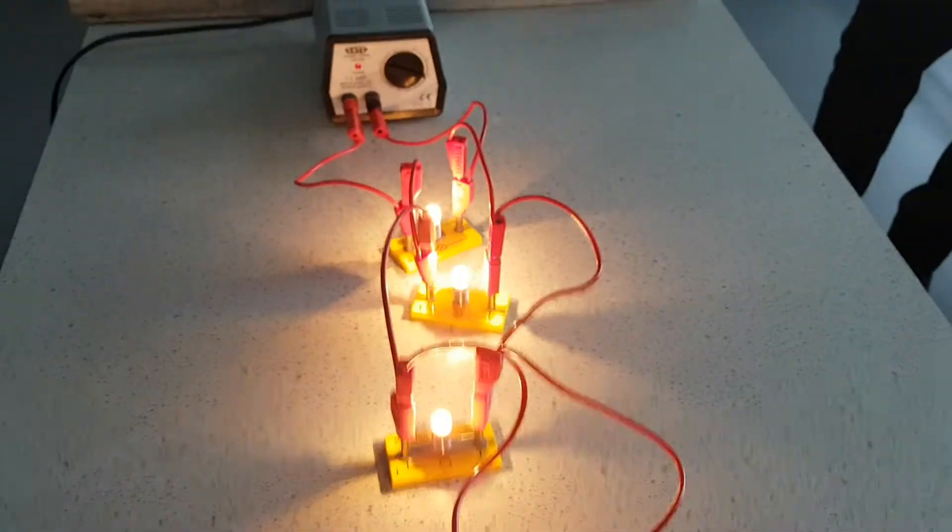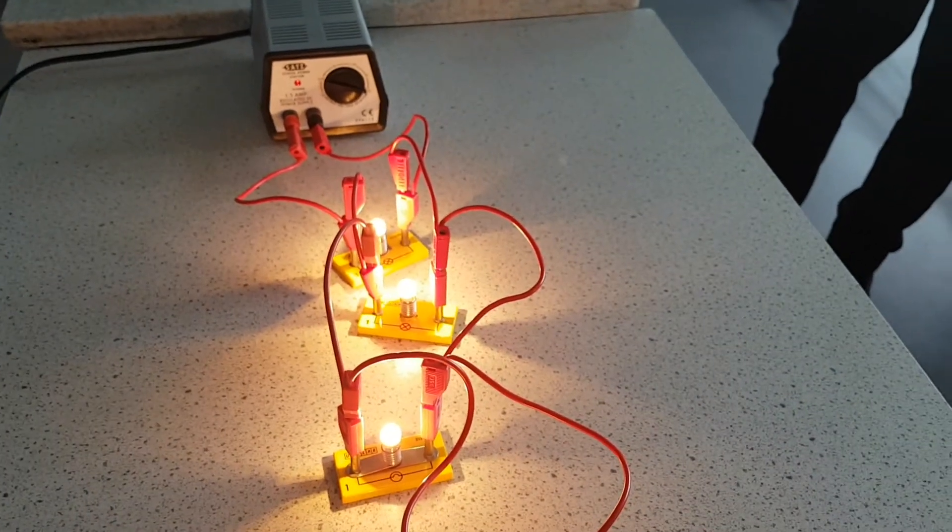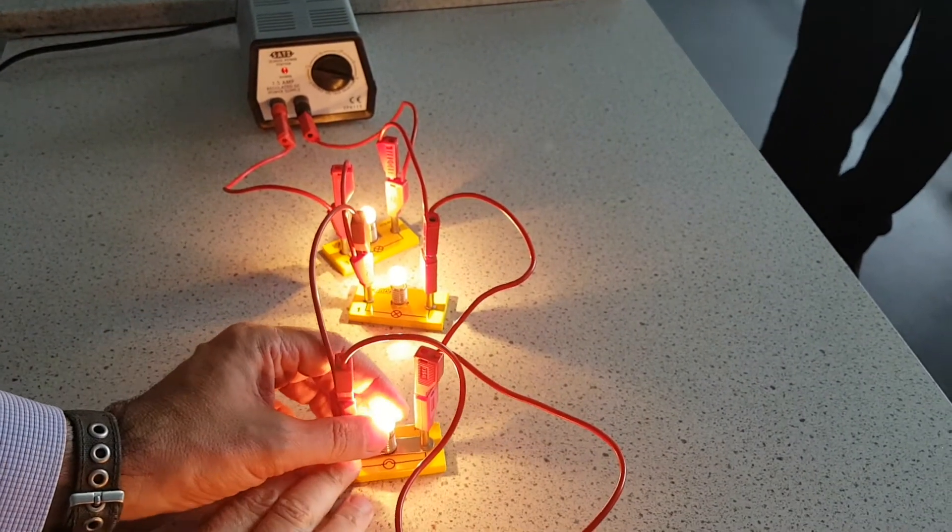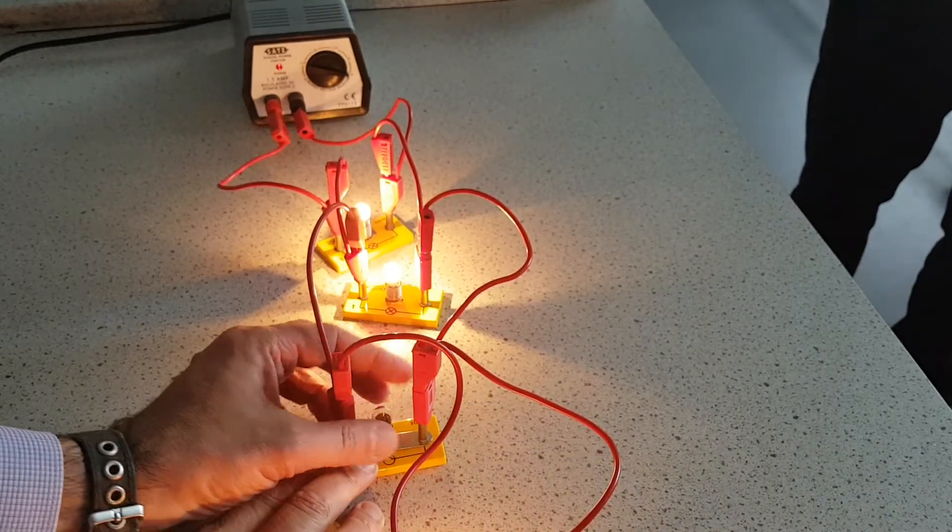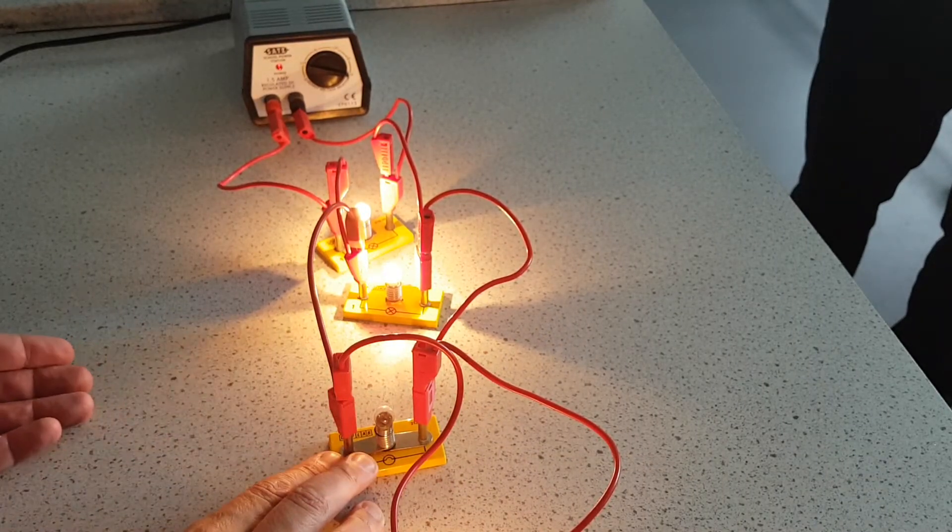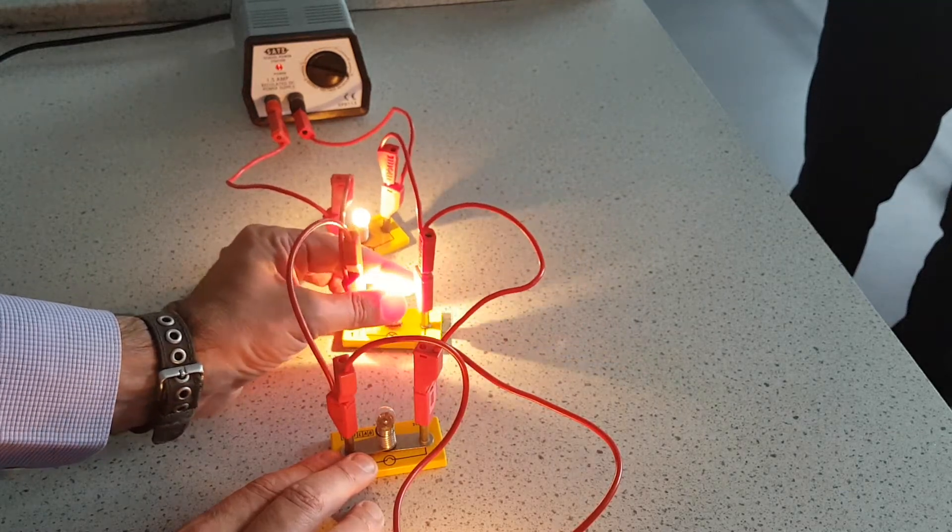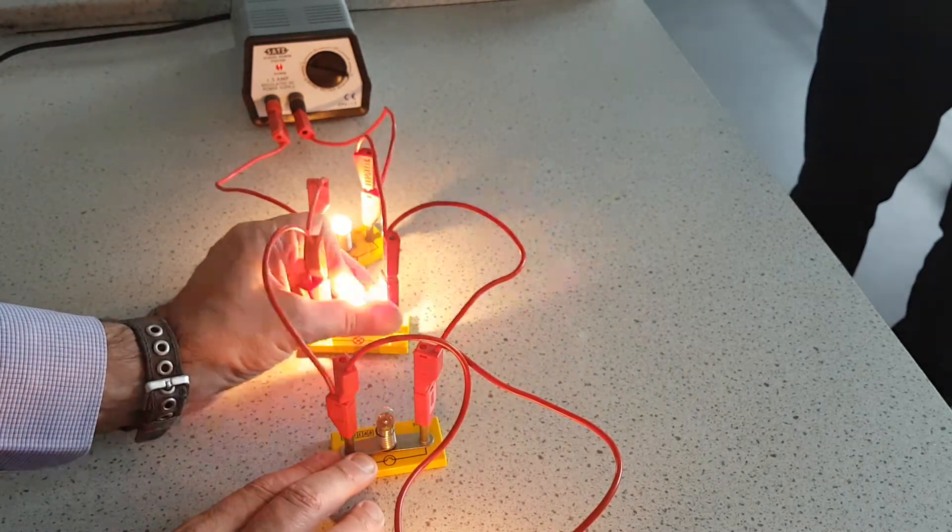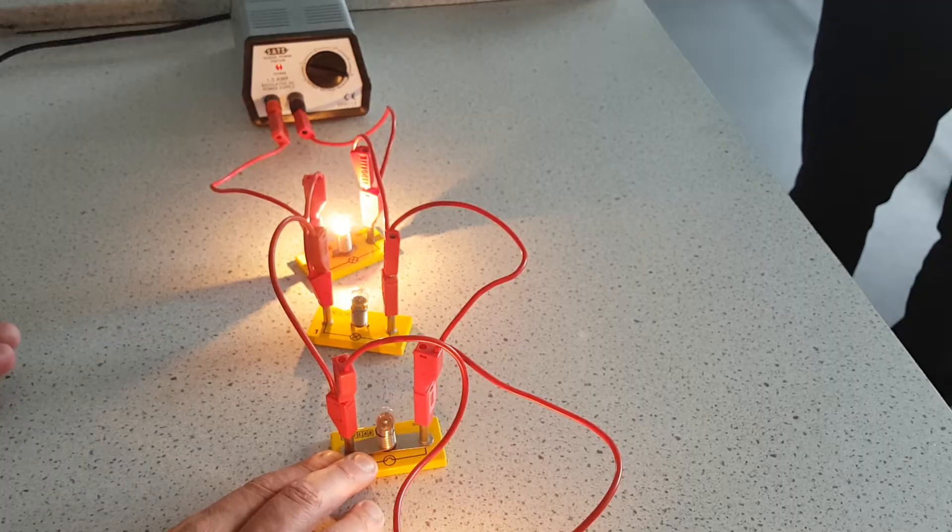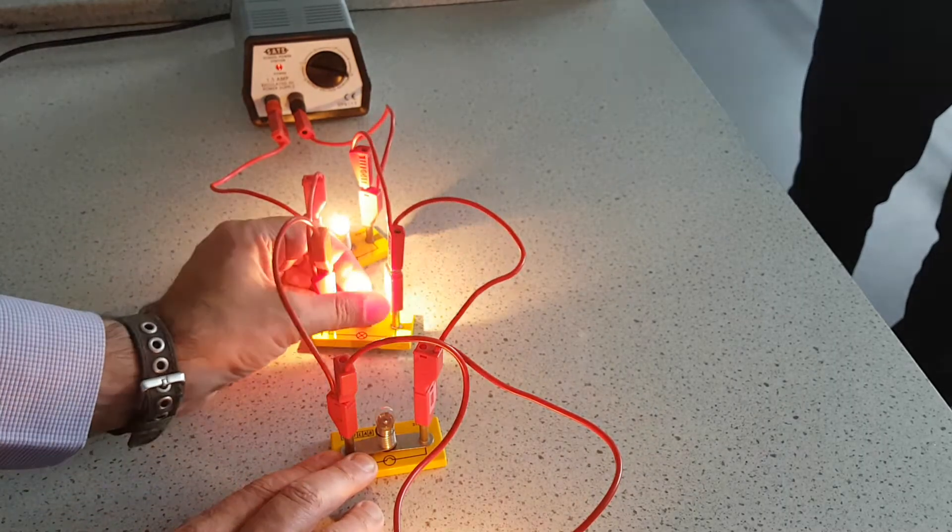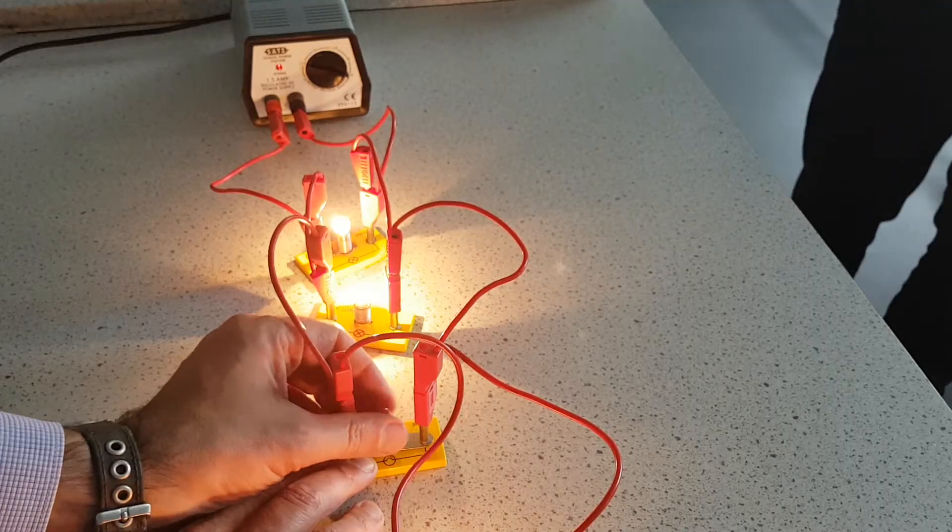And I'll show you something else. This is much like being in a house. If I unscrew one bulb, what happens to the rest? Unscrew one bulb. The rest stay on. Unscrew another bulb. The rest stay on. They go off. Everything else stays on. And that's what happens in a parallel circuit.